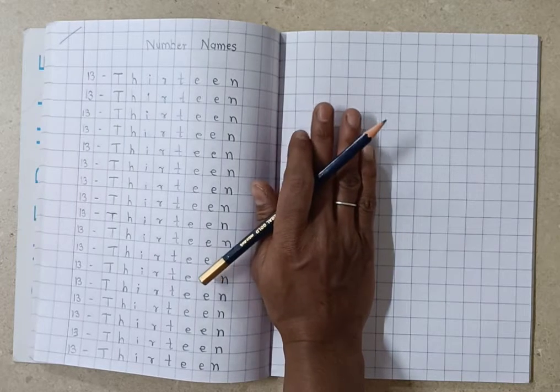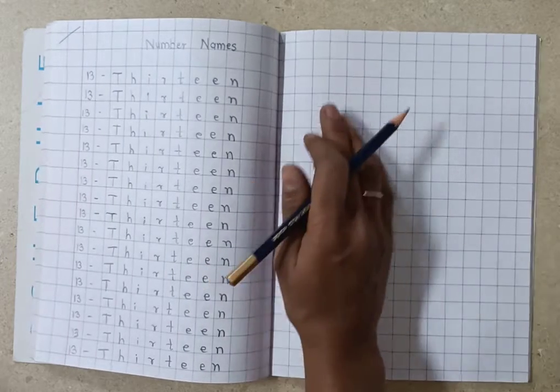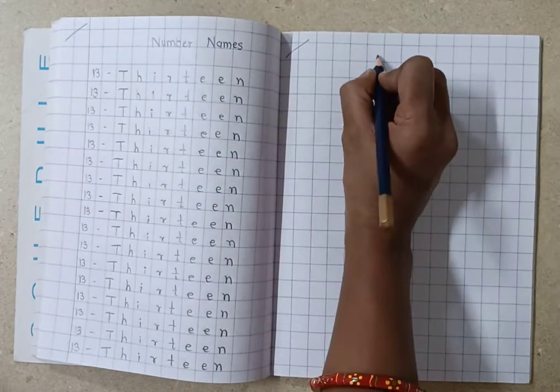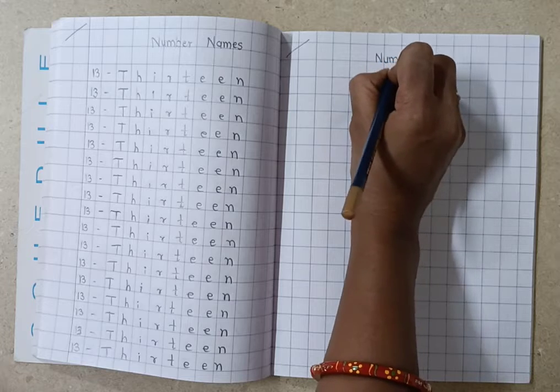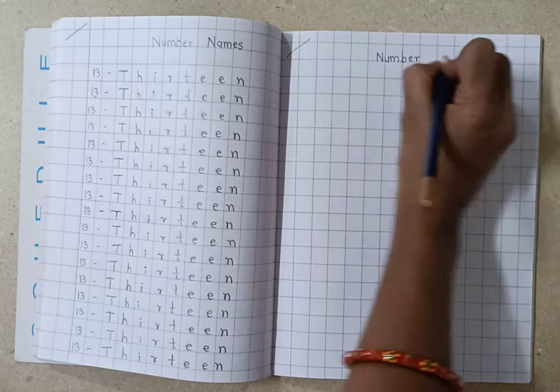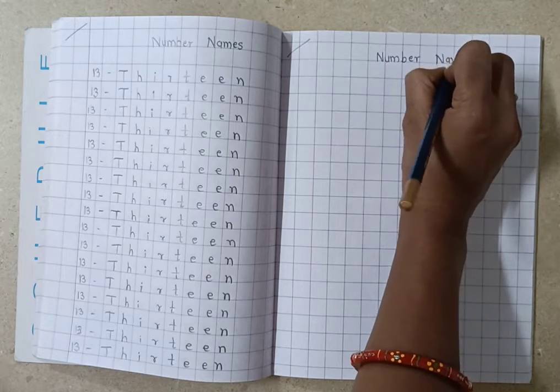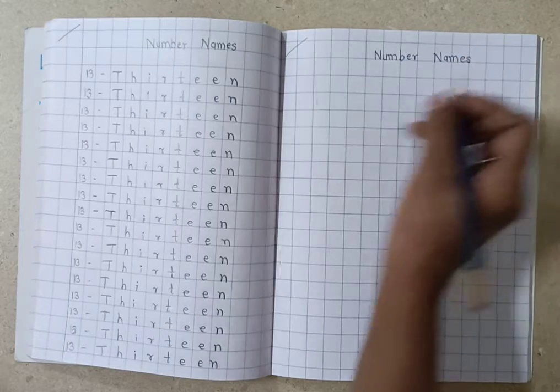So take out your maths notebook. Here you have to mention the date. Then give heading number names. N-U-M-B-E-R-N-A-M-E-S number names.